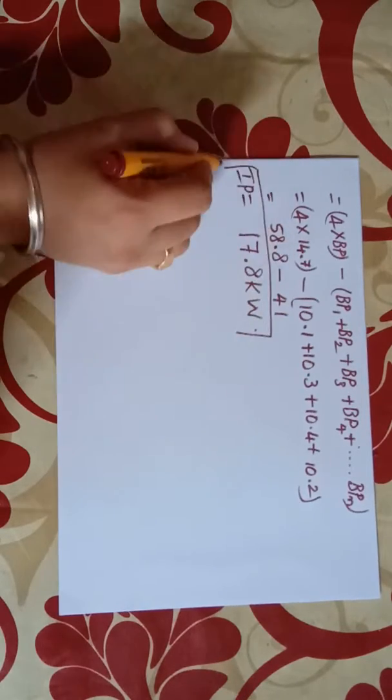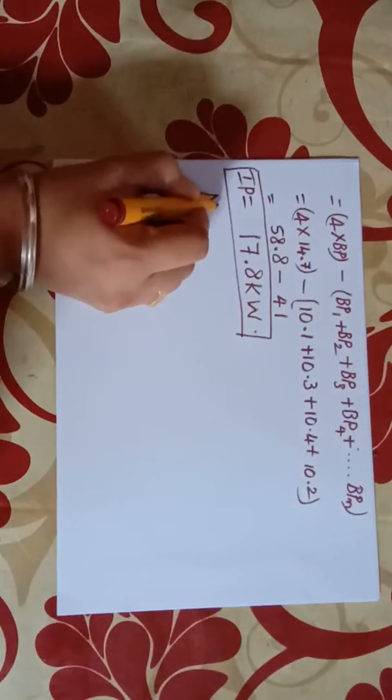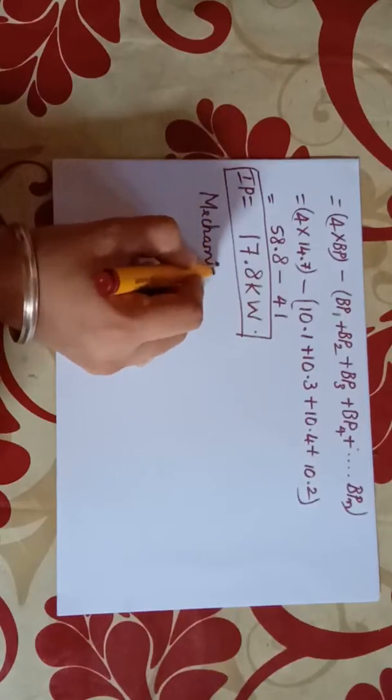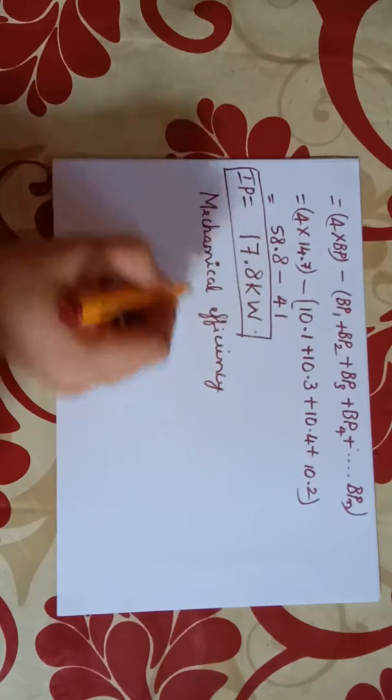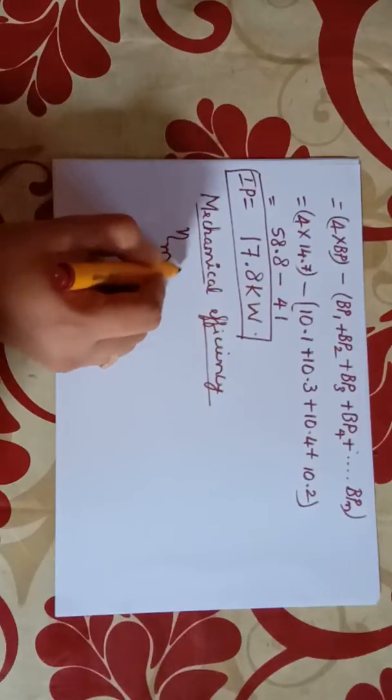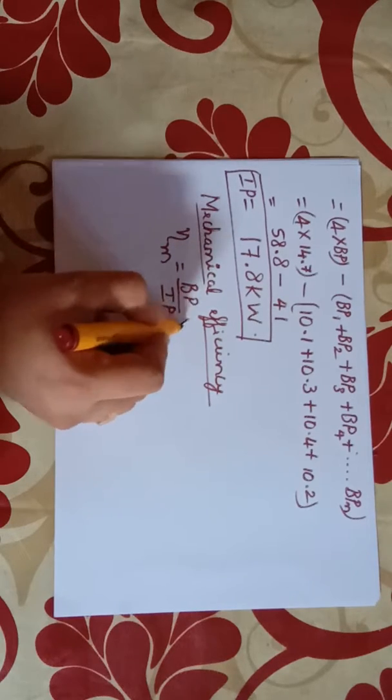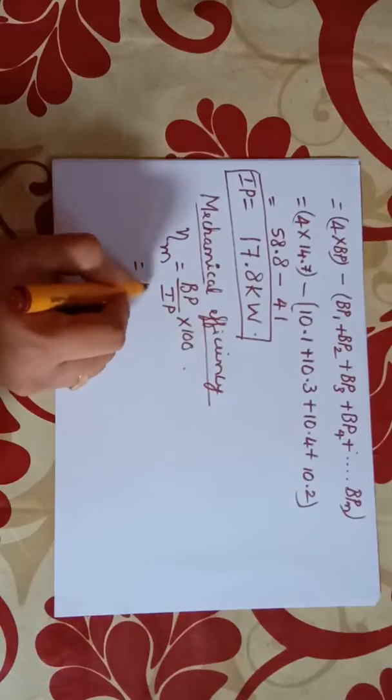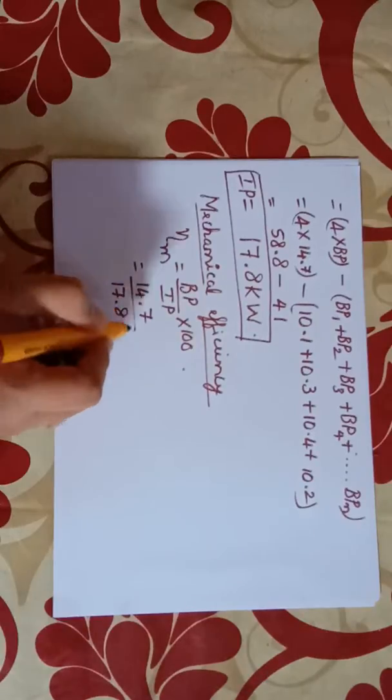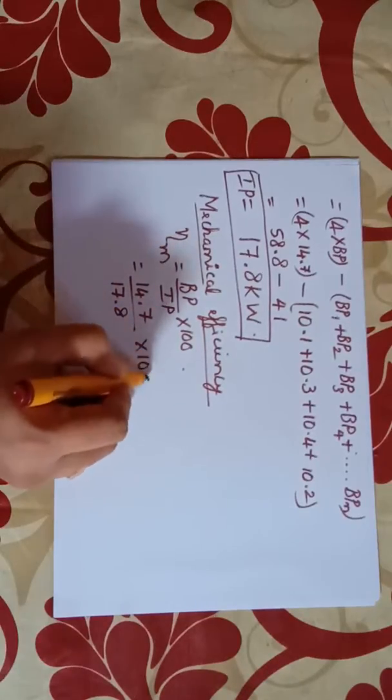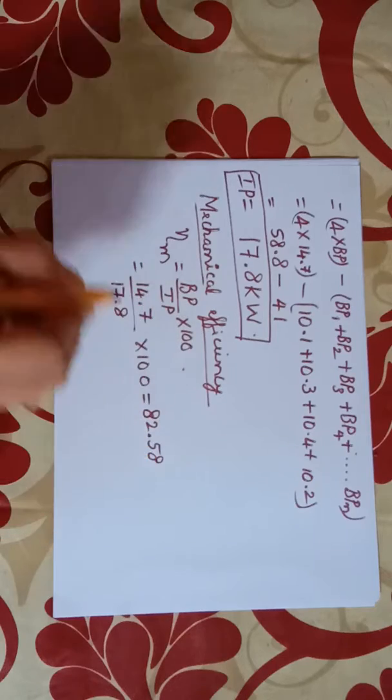Now mechanical efficiency, eta M, is equal to BP by IP into 100, that is 14.7 by 17.8 into 100, which equals 82.58 percent.